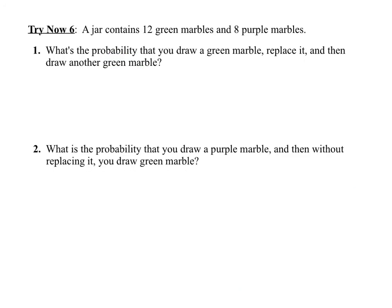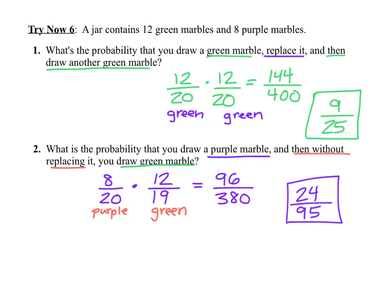Here's our final try now. Pause the video and try it on your own. The answers: first, total up the marbles — 12 plus 8 is 20. Probability of drawing a green marble, replacing it, then another green: 12 out of 20 times 12 out of 20, which simplifies to 9 out of 25. For drawing a purple marble and then, without replacing it, a green marble: 8 out of 20 times 12 out of 19. Multiplying those fractions gives 24 out of 95. That's it for Lesson 12.1 Day 2. Thanks for watching!